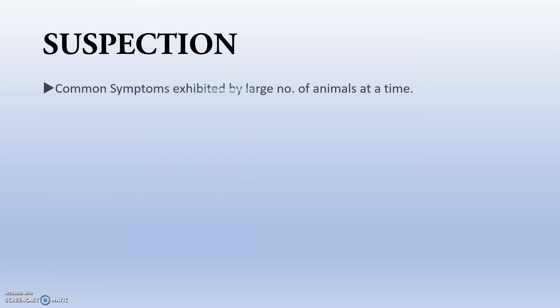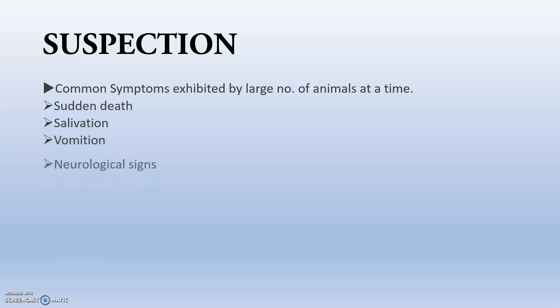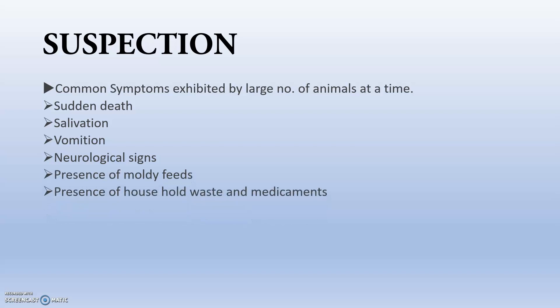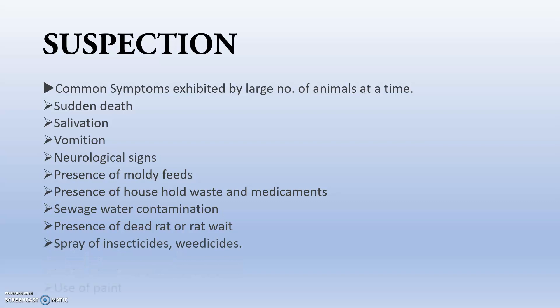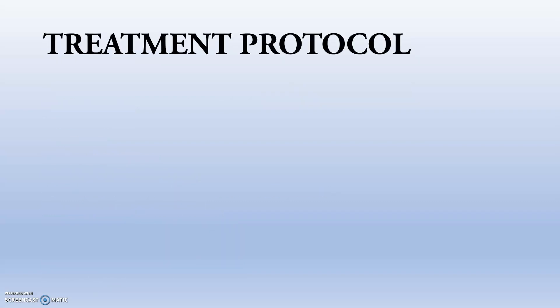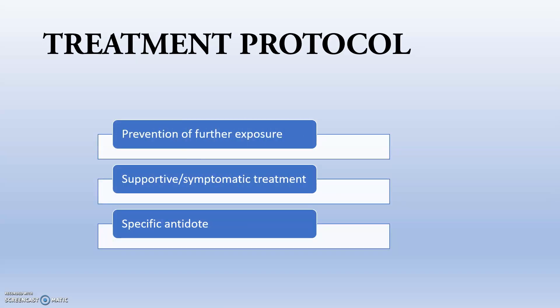Common symptoms in large animals when poisoning is suspected include sudden death, salivation, vomition, and neurological signs. Indicators in the environment include presence of moldy feeds, household waste, medicaments, sewage water contamination, presence of dead rats or rat weed, spray of insecticides and weedicides, and use of paint.